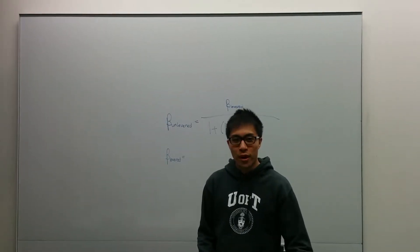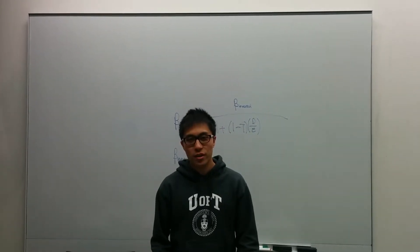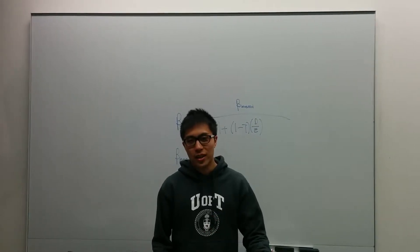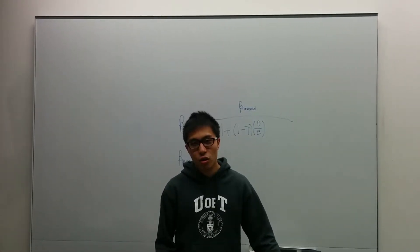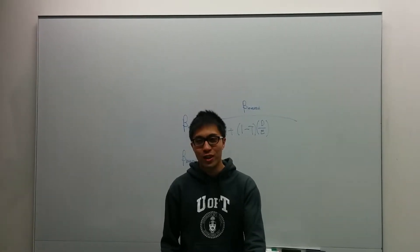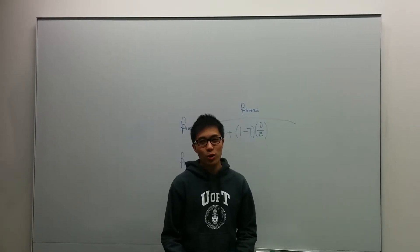As you already know from the capital asset pricing model, you can get betas two different ways. You can get betas from regressing against the index, or you can get it by a pure comparable set and then unlevering and relevering. So why do we do unlevering and relevering? Why is it important?